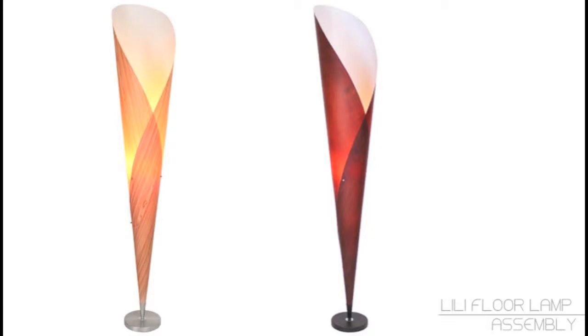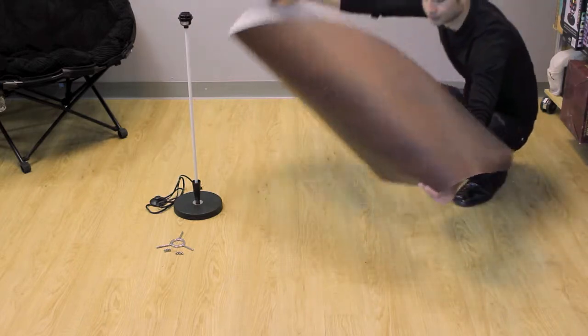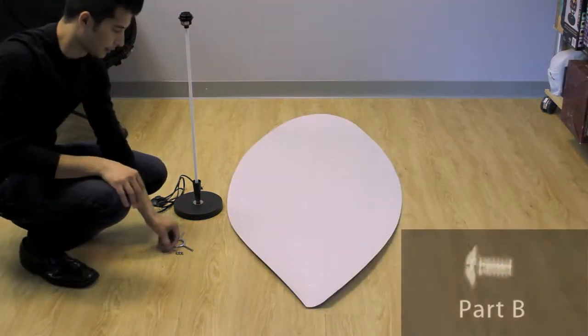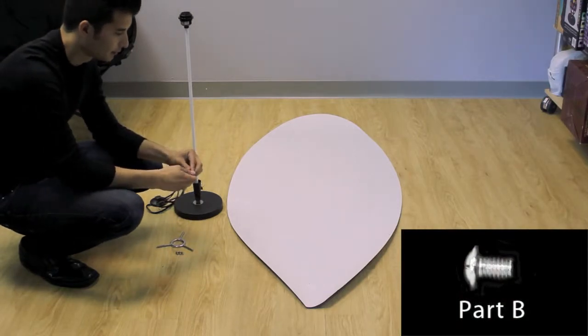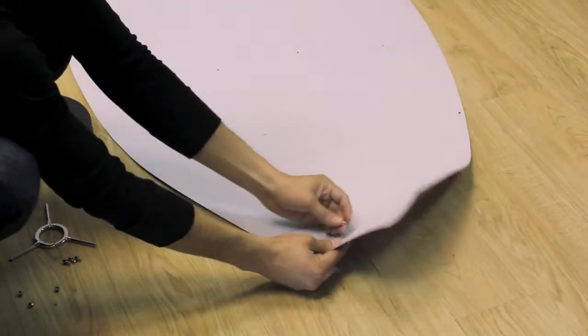Lily Floor Lamp Assembly. Start by flipping the lampshade white side up. Take Part B, three screws, and push them through the lampshade, one by one, like so.